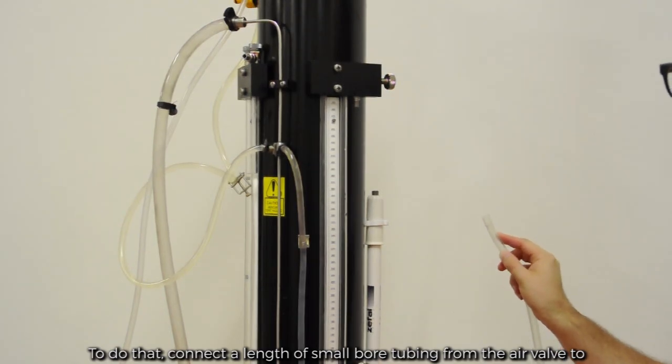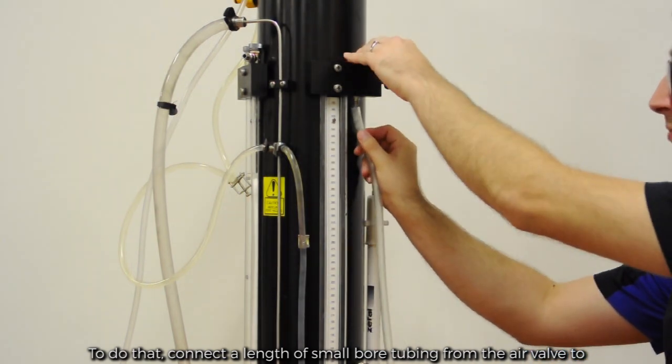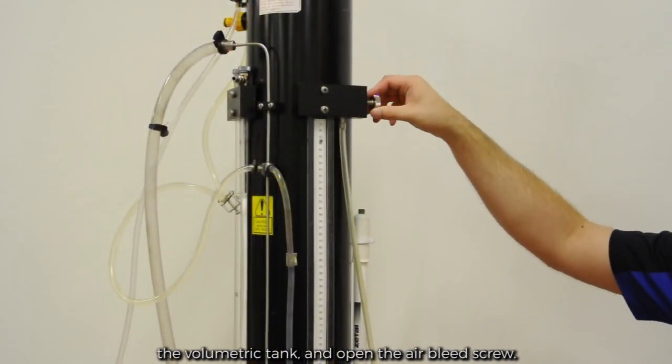To do that, connect a length of small bore tubing from the air valve to the volumetric tank and open the air bleed screw.